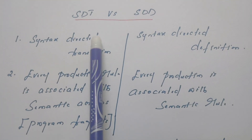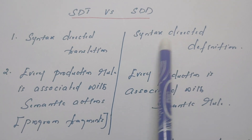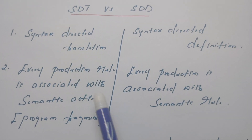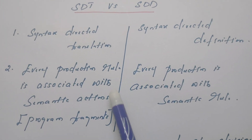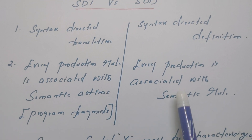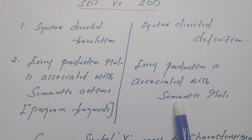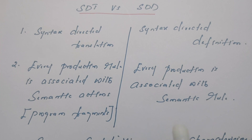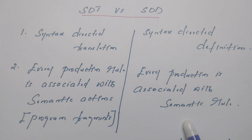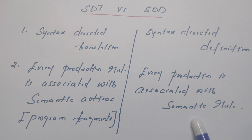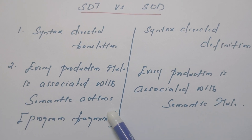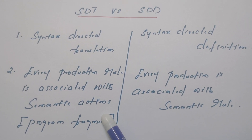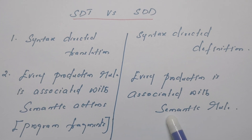SDT means syntax-directed translation. SDD means syntax-directed definition. What is the difference between these two? In SDT, every production rule of context-free grammar is associated with a semantic action. Whereas in SDD, every production rule is associated with a semantic rule. The difference between semantic rule and semantic action: a semantic rule is the logic written against every production rule, whereas a semantic action is the actual implementation — a program fragment is attached against a production rule.